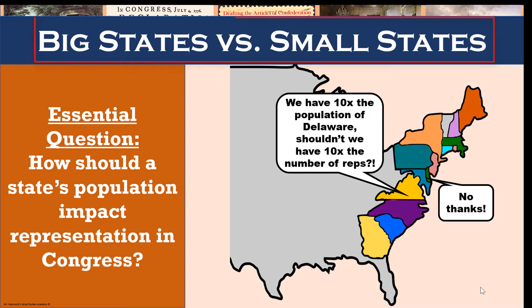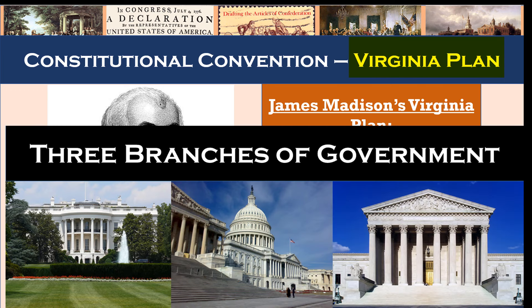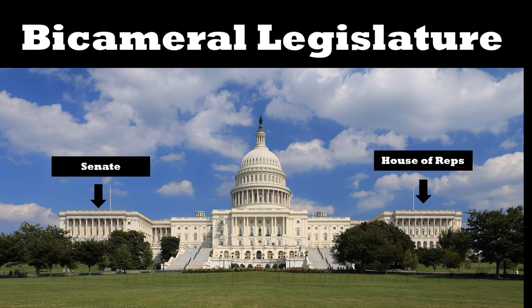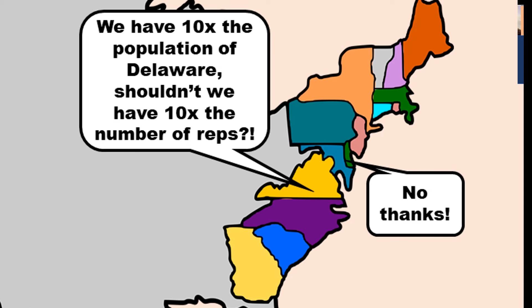On the issue of representation in Congress, it came down to states with big populations versus those with small populations. James Madison had his fellow Virginia delegate Edmund Randolph introduce his outline for the new government, known as the Virginia Plan. This created three branches for the federal government. However, Madison proposed a bicameral, or two-chamber, Congress — one that would allow the two houses to check each other. He proposed that representation in both be based on population, arguing that Virginia and the large states would have to pay more taxes and therefore should have a larger voice in the legislative body.